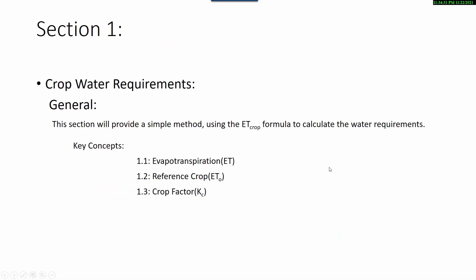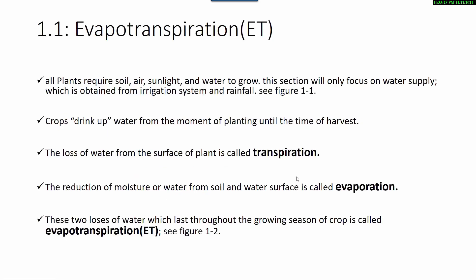Section 1: Crop Water Requirement. This section will provide a simple method using the crop evapotranspiration formula to calculate water requirements. Key concepts in this section are evapotranspiration, reference crop, crop factor, and evapotranspiration.